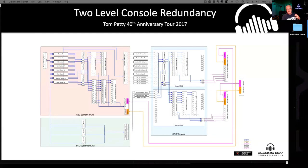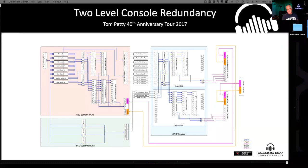We put in place essentially two levels of redundancy. If the surface failed, I could move to a second surface and continue to mix. Then a third version where if the failure got deeper, we could rely on audio from the monitor console coming back into a third console — still mix the event with a reduced feature set. The final version was taking an output from the monitor console directly to the PA system, bypassing the front-of-house console entirely.